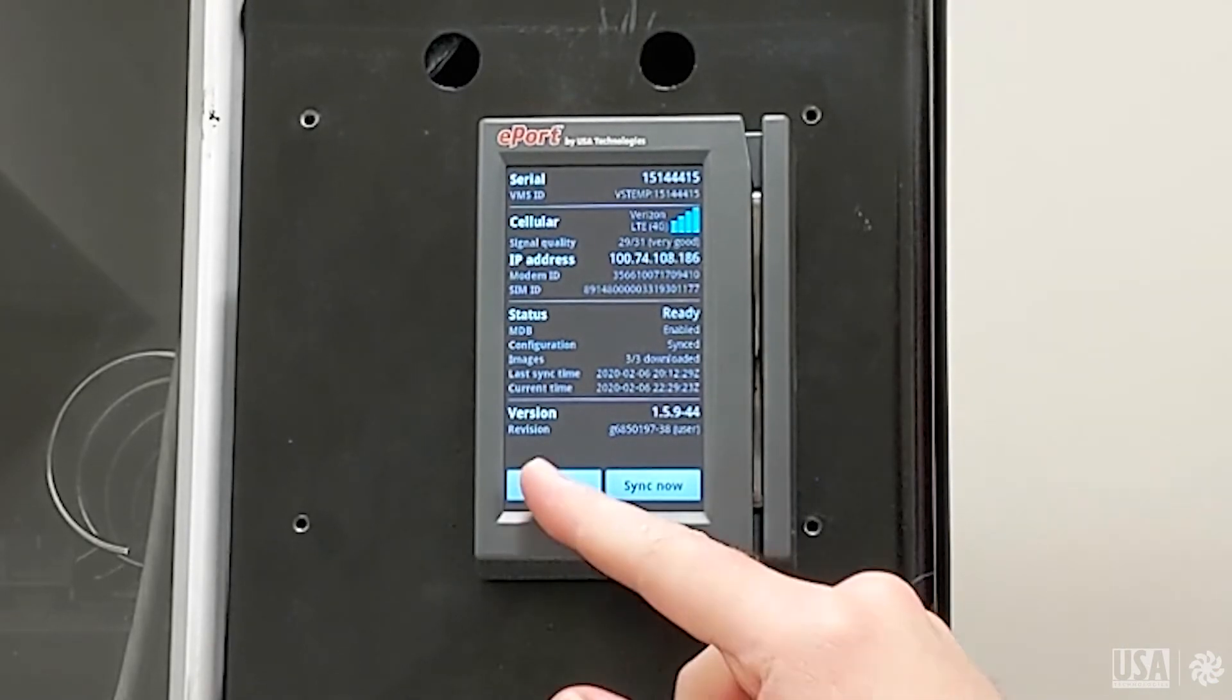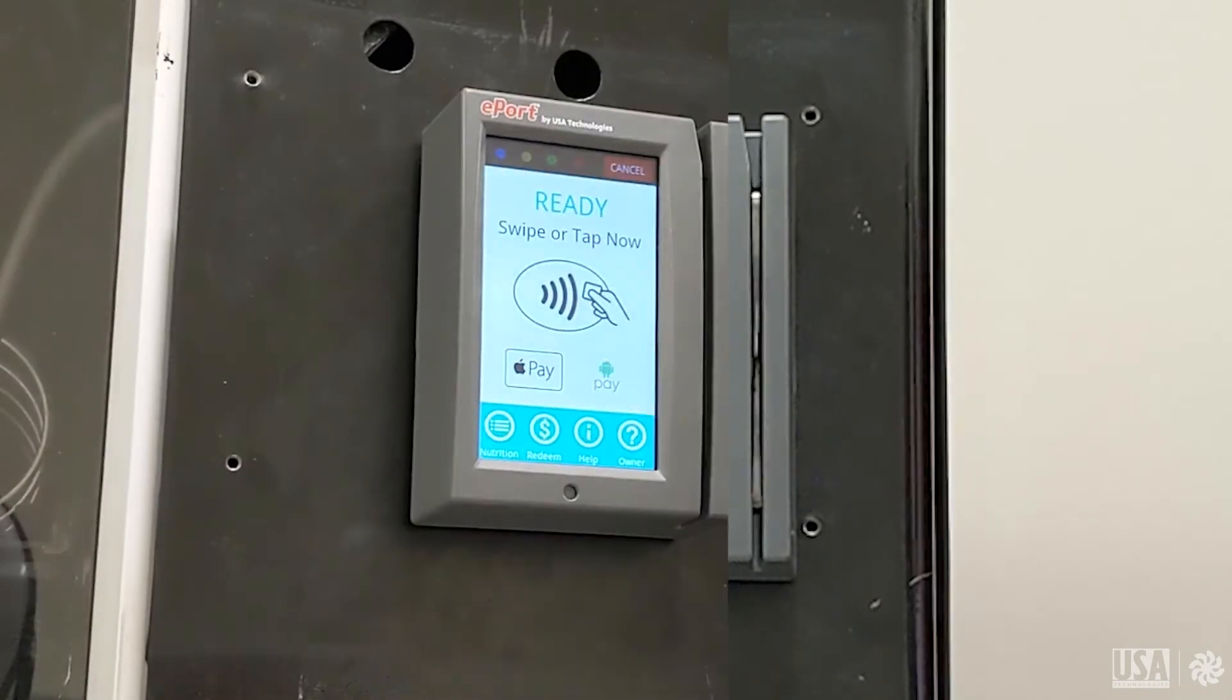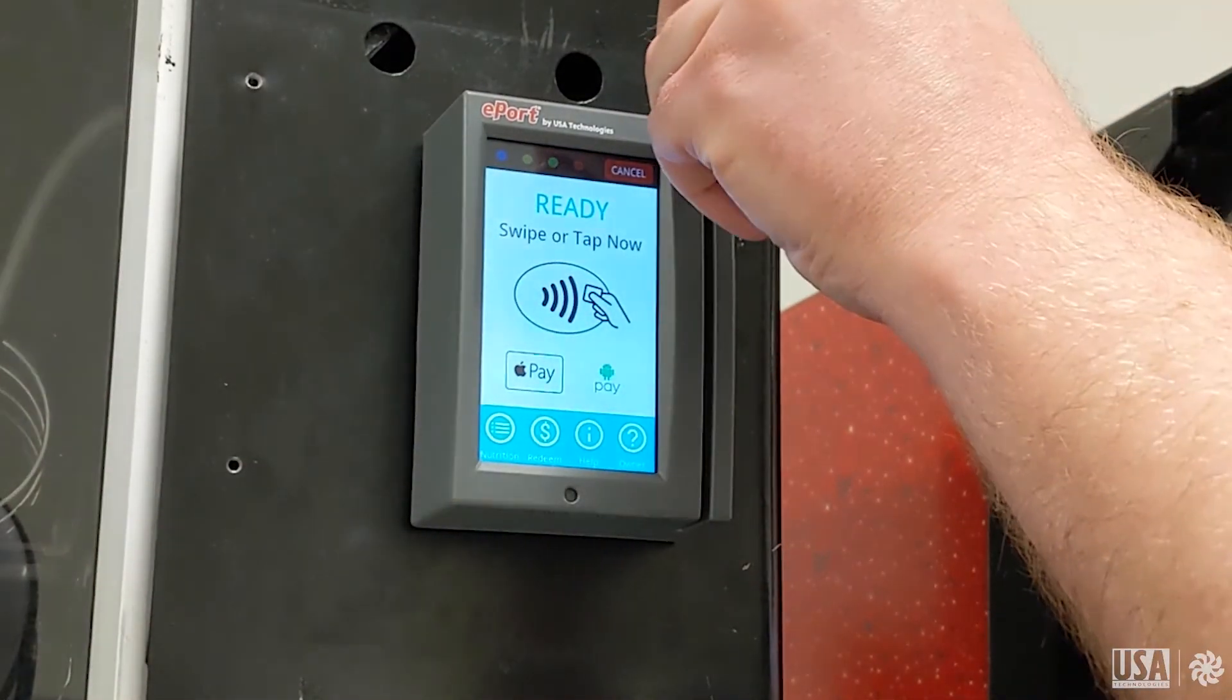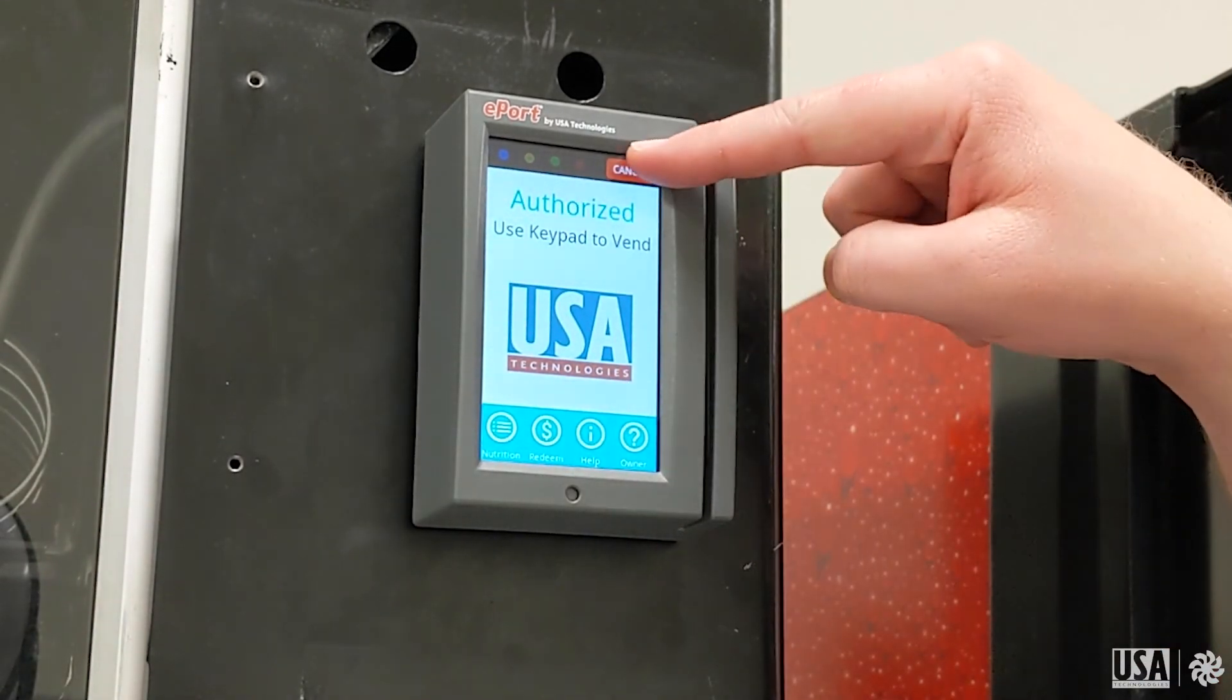Once you're done, press back and the back arrow, and you'll go to the ready screen. At this point, you'll want to do a test swipe to confirm that transactions will process. Once it's authorized, you can complete a vend or press the cancel button.